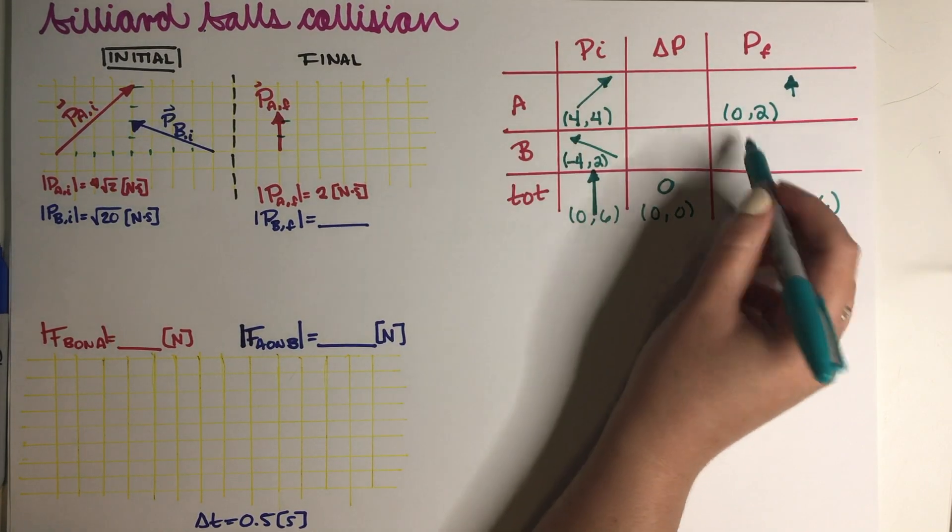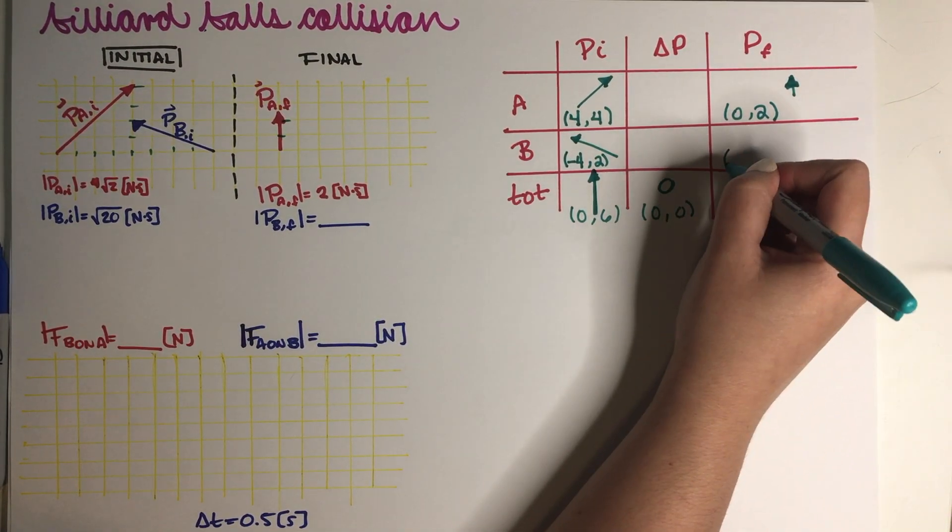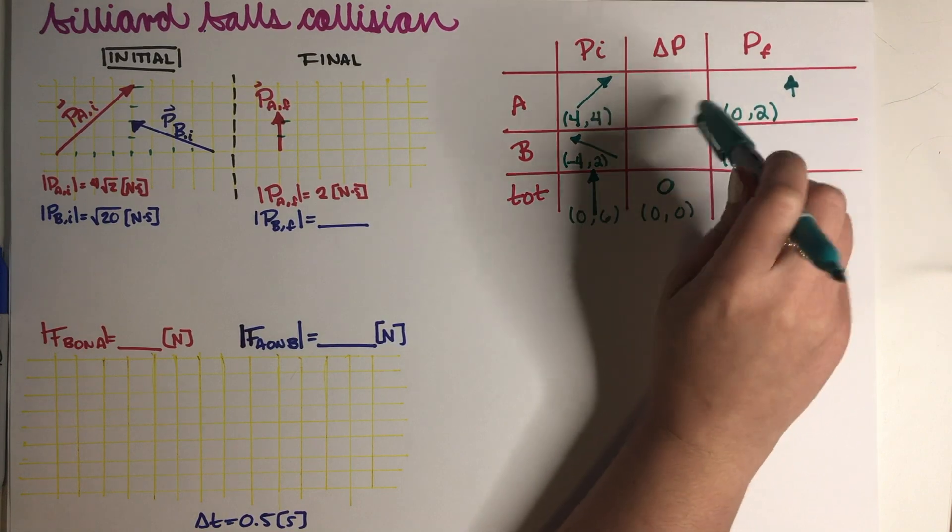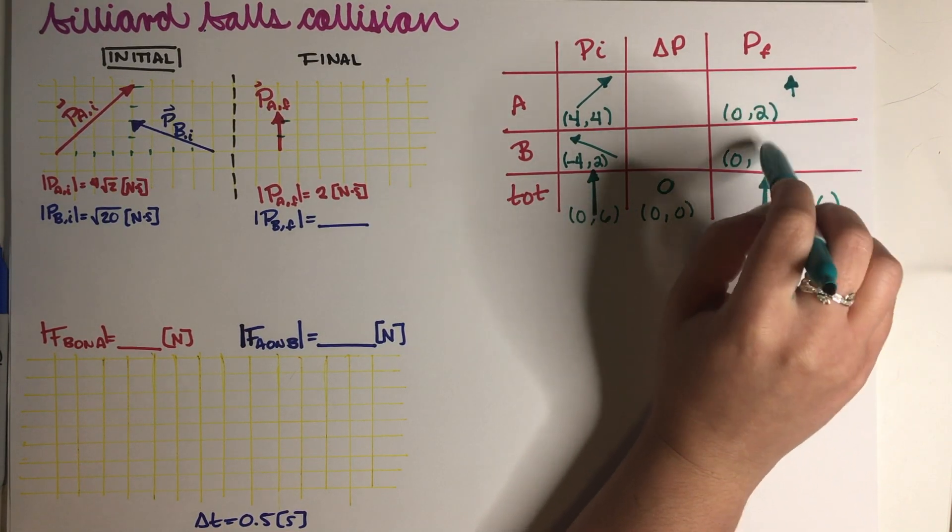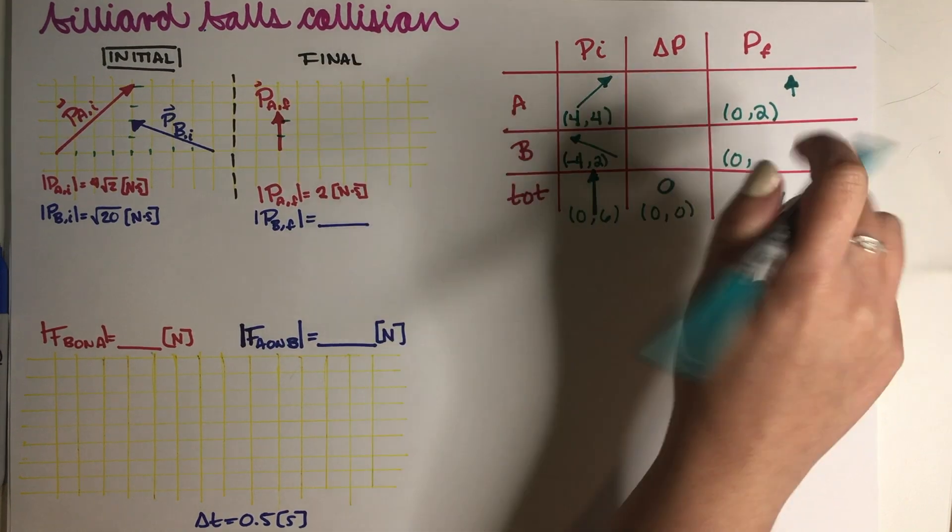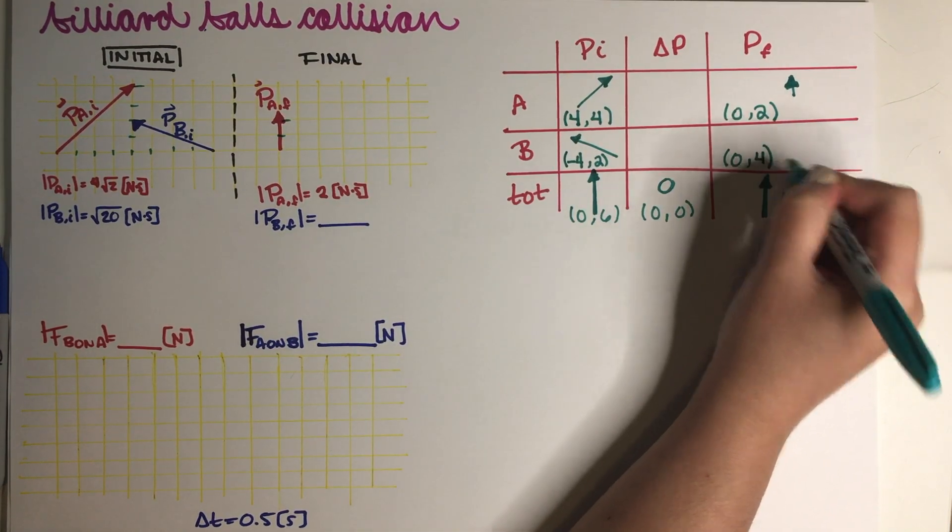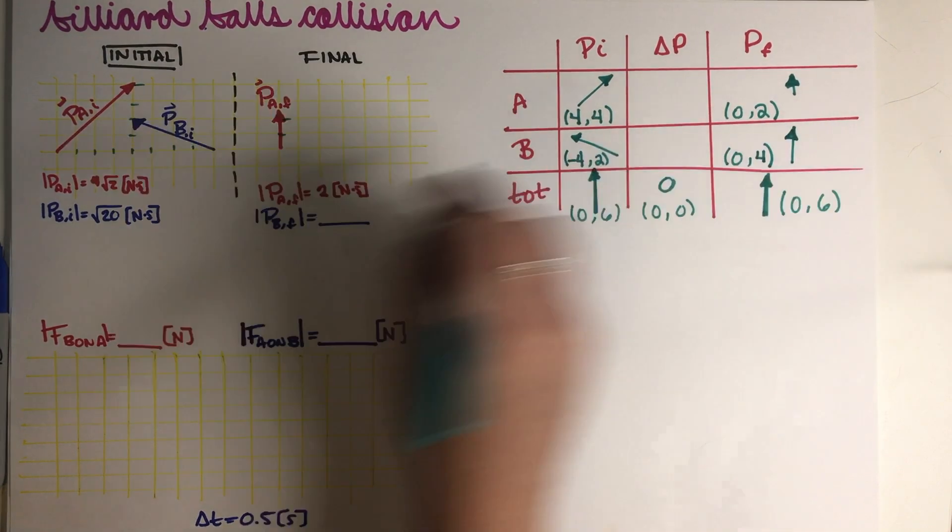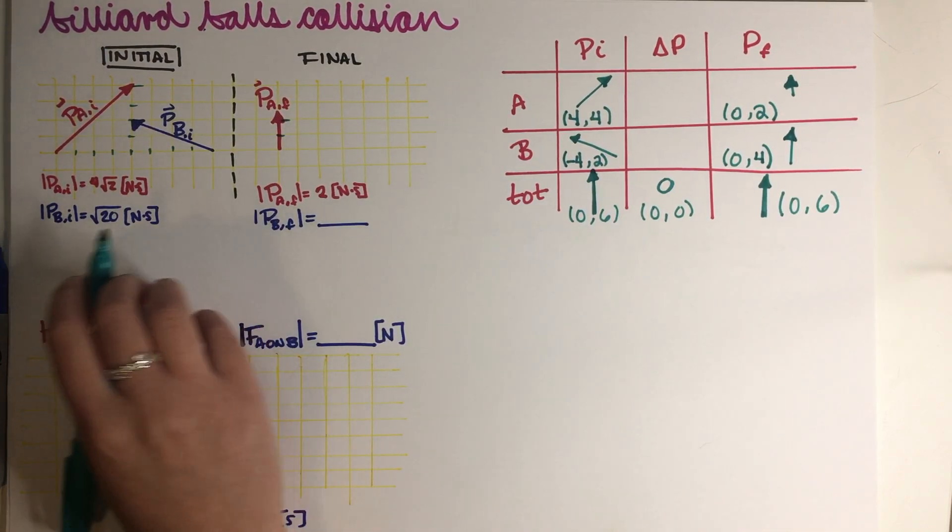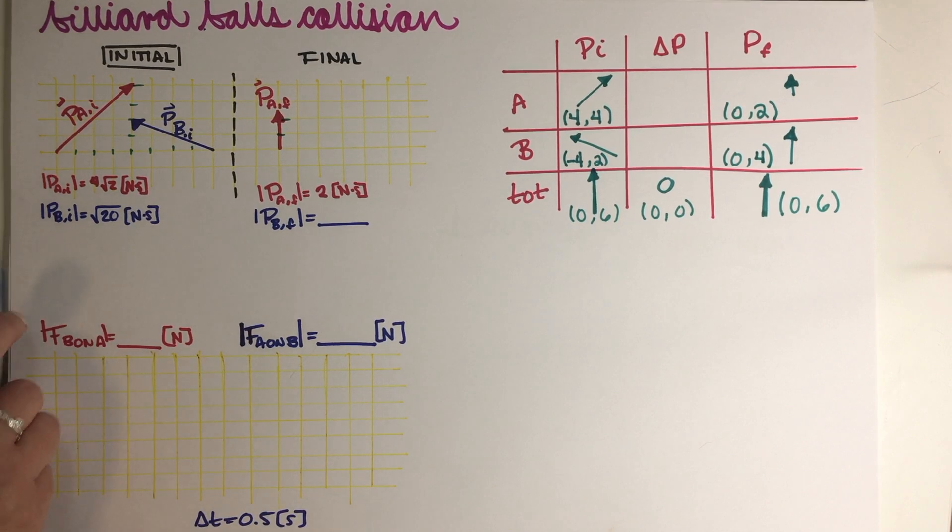And from all of this information, we can figure out what the final momentum of B should be. So this plus this has to add up to 0. So 0 goes here. So that's 0 plus 0 adds up to 0. And then 2 plus something has to be equal to 6. And that would be 2 plus positive 4. So this is going to be 0 and 4. And this is basically going to be our final answer for part A of this problem.